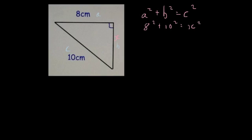And then 8 squared, well 8 times 8 is 64, plus 10 squared, 10 times 10 is 100, equals X squared.